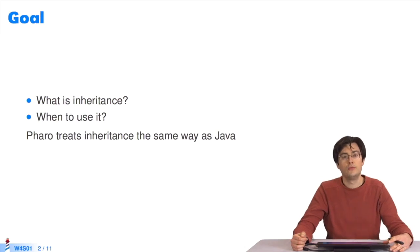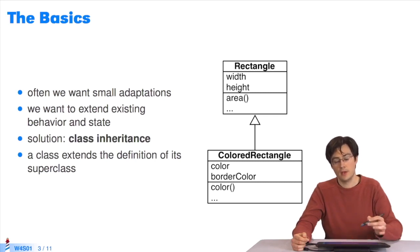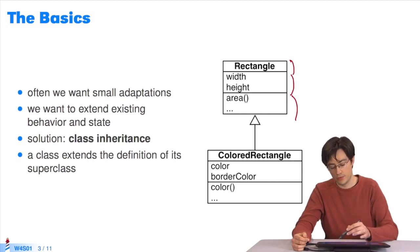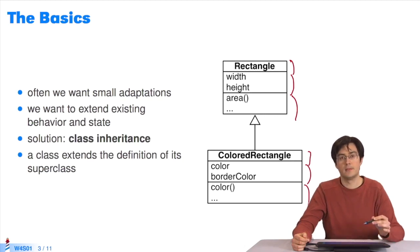This sequence will cover what inheritance is and how to use it. Two classes are represented on the right. The rectangle class, with its name first of all, its instance variables, and its methods. Under it, you see the same thing. The class name, colored rectangle, its instance variables, and its methods.